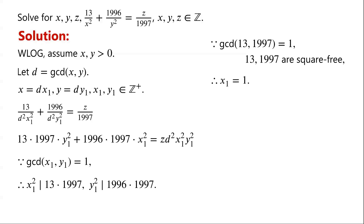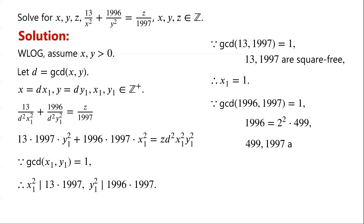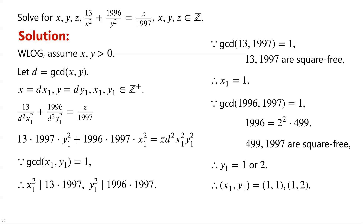Because the greatest common divisor of 13 and 1997 is 1, and both 13 and 1997 are square-free, so x1 must equal 1. Because the greatest common divisor of 1996 and 1997 is 1, and 1996 equals 2 squared times 499, and both 499 and 1997 are square-free, so y1 can be 1 or 2. Therefore, (x1, y1) equals (1, 1) or (1, 2).